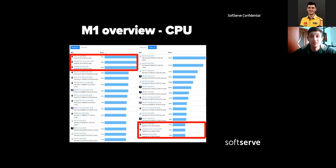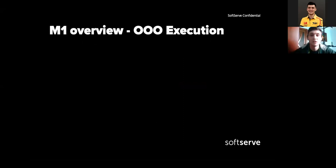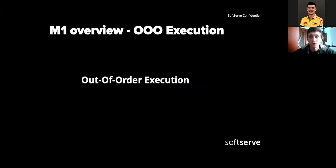The highest-performing Mac is the Mac Mini, which earned a single-core score of 1701 and a multi-core score of 7373, with MacBook Pro and MacBook Air coming just behind. One reason for such results is the increased parallel processing capabilities of the chip. More precisely, the M1 Firestorm cores use something called out-of-order execution. It allows the processor to execute instructions in an order governed by the availability of input data and execution units rather than their original order in a program, so the processor can avoid being idle while waiting for preceding instructions to complete.